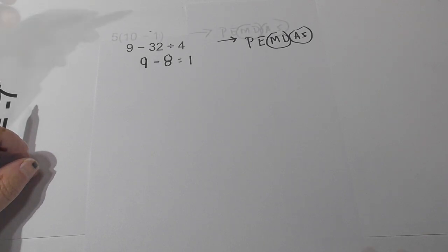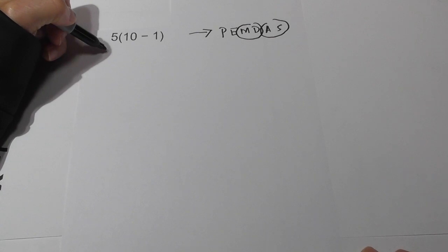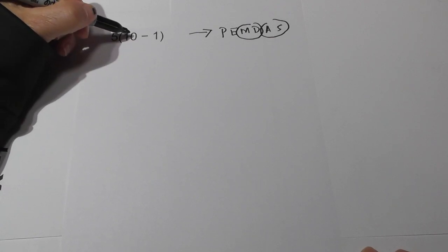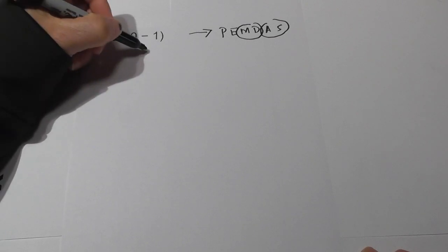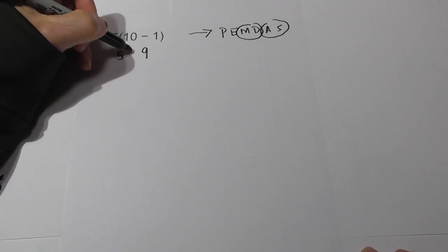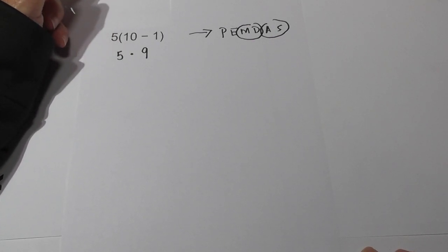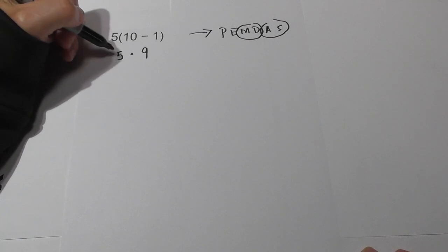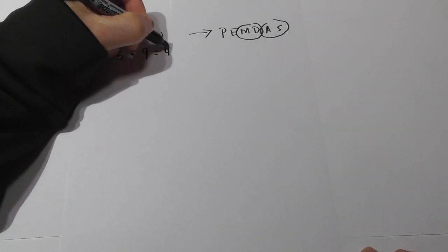Problem 4: we finally have some parenthesis. Working left to right — yes, we have parenthesis. We have 10 minus 1 so we complete that operation first: 10 minus 1 is 9. Bring down the 5. A number right outside the parenthesis means multiplication. So 9 times 5 equals 45.